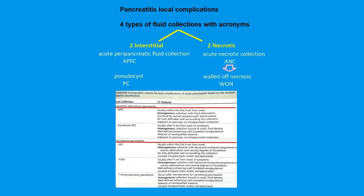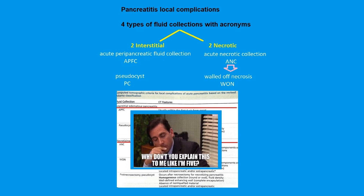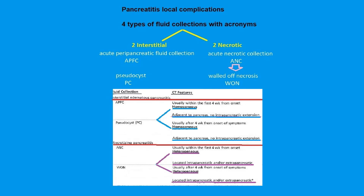Here's a table describing the fluid collections. The fluid collections associated with interstitial edematous pancreatitis — the APFC and the pseudocyst — have homogeneous contents on CT, are adjacent to the pancreas, and push on it, but are not intrapancreatic. The necrotizing fluid collections — acute necrotic collection and walled-off necrosis — have heterogeneous contents and may be extrinsic to the pancreas but also within the pancreatic parenchyma, unlike the interstitial fluid collections.